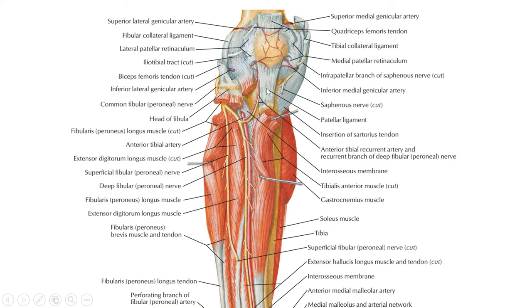In the anterior view of the knee joint with most muscles removed, you can see the common peroneal nerve, which winds around the neck of the fibula and divides into superficial and deep branches. The superficial branch supplies the lateral compartment of the leg, and the deep branch supplies the anterior compartment. A recurrent branch — the anterior tibial recurrent nerve — supplies the knee joint. So the common peroneal nerve supplies the knee joint from the anterior and lateral aspect.